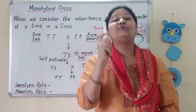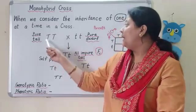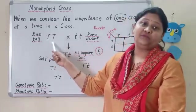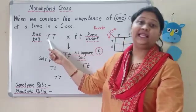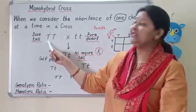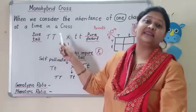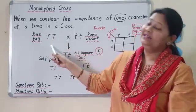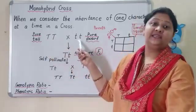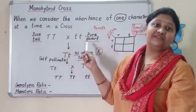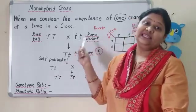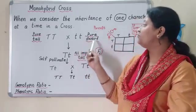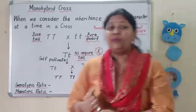What is the meaning of pure tall parent? It is represented as capital T capital T — both alleles are the same, meaning only the dominant allele is present. Both are capital T, so it is a homozygous condition. Therefore we call it pure tall. Coming to the other side, pure dwarf is represented as small t small t — the same allele, also a homozygous condition. So it is known as pure dwarf.